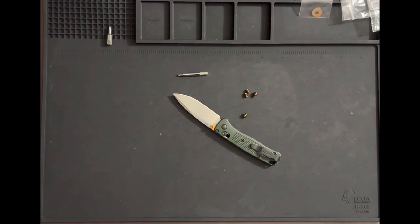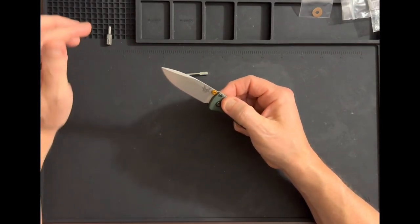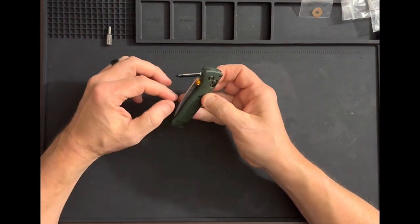Okay, so we have a short modification video for you today. This is the Benchmade 533 mini bug out.